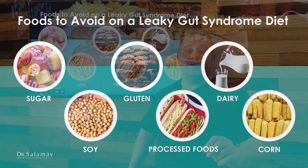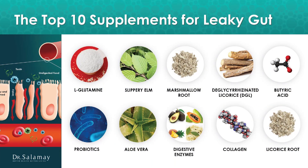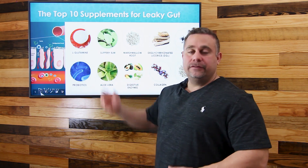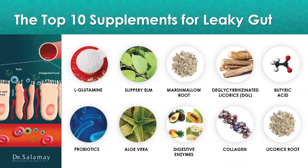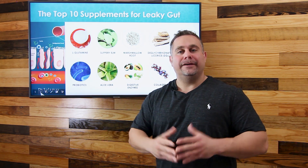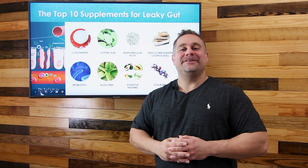We also want to avoid hydrogenated oils — those are very bad and we don't want to consume those. There are also supplements that help with leaky gut, and I go into more detail in another video about each individual one. Here's the list: L-glutamine, slippery elm, marshmallow root, DGL, butyric acid, probiotics, aloe vera, digestive enzymes, collagen, and licorice root. These are all very good for leaky gut, and I'll talk about how each one promotes a healthy gut barrier and helps you overcome leaky gut.